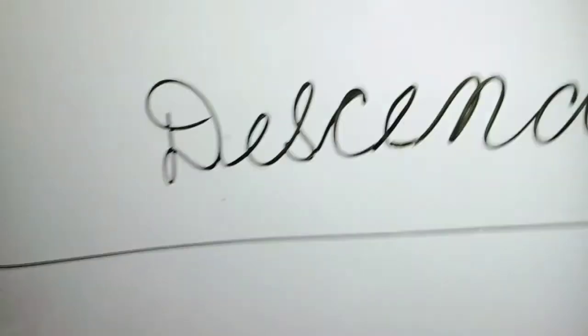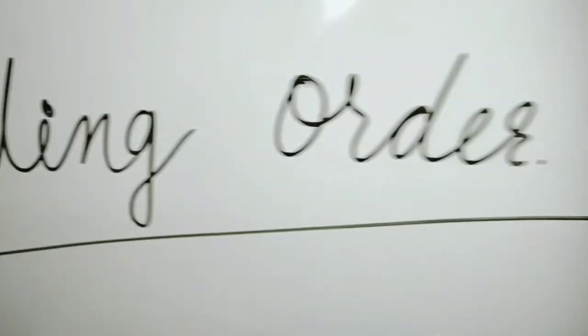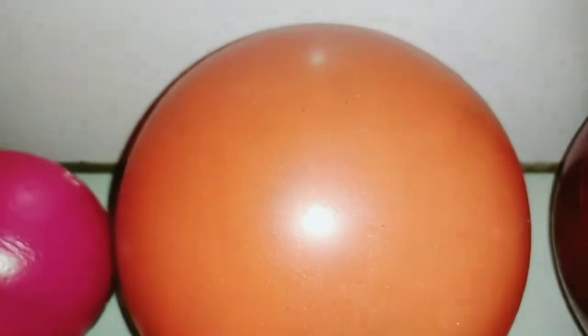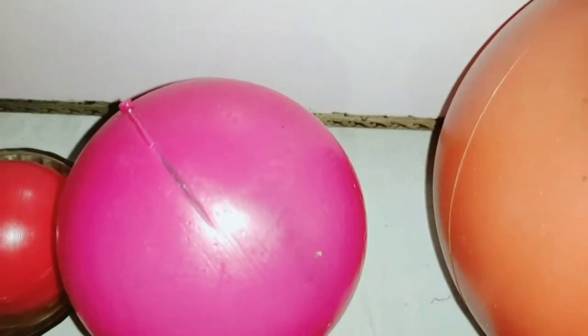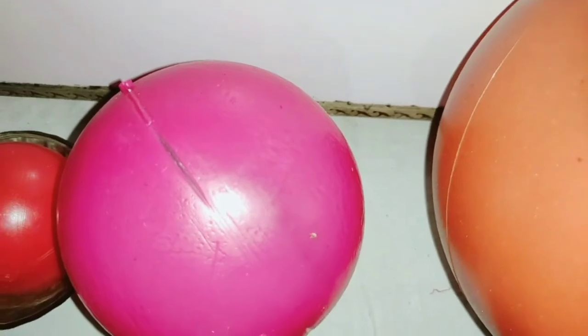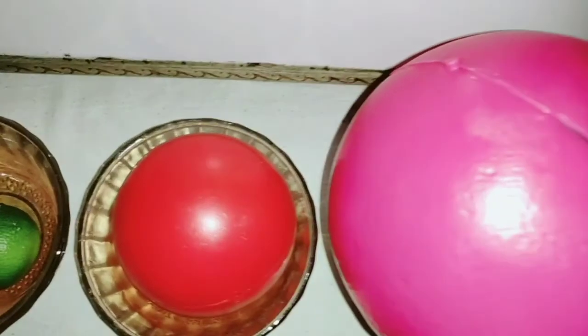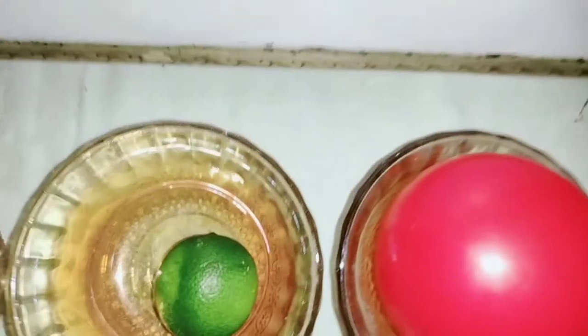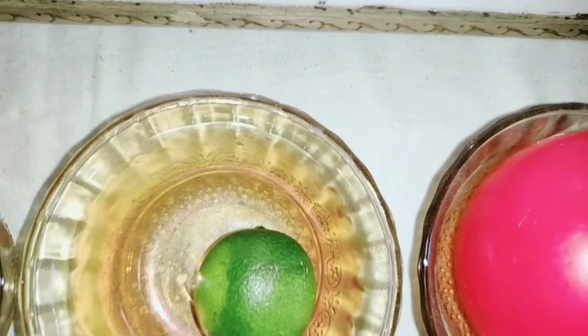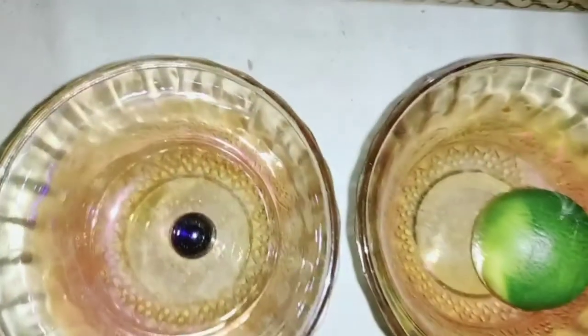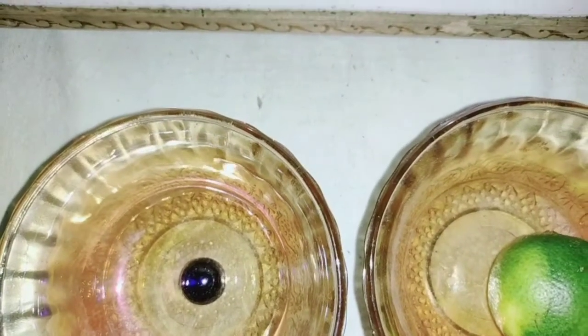Now we will arrange these balls in descending order. The biggest ball will come first. After that the orange ball, which is smaller than the biggest. After the orange ball, the pink ball. After that the red ball. After the red ball, the green ball. And at last the smallest one — the blue ball.